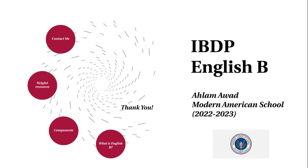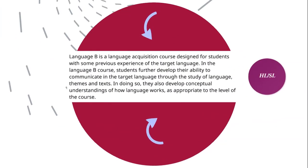First, we have the course description. According to the guide — which you'll find on our BC main page and in the resources section — Language B is a language acquisition course designed for students with some previous experience of the target language. In this course, students develop their ability to communicate in the target language, which is English, through the study of language, themes, and texts. That means we'll be looking at certain themes and applying them throughout all our units, and in doing so, students also develop conceptual understanding of how language works.